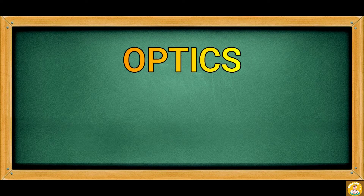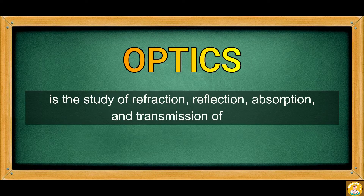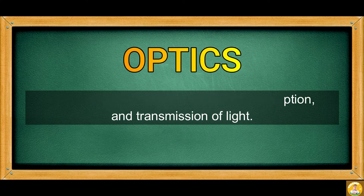To understand light further, you have to learn how it interacts with different objects and colors. This branch of science is called optics. Optics is the study of refraction, reflection, absorption, and transmission of light.